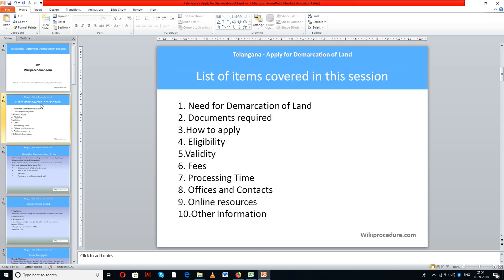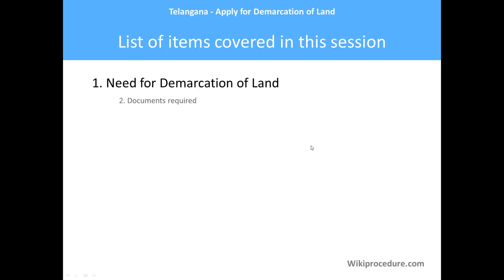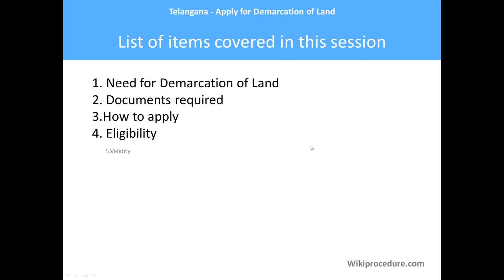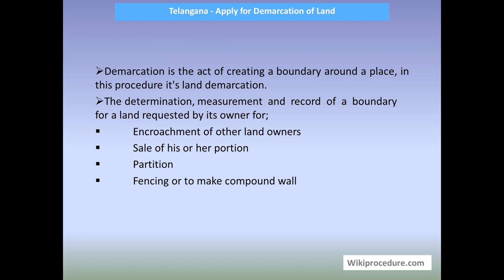Items covered in this session: need for demarcation of land, documents required, how to apply, eligibility, validity, fees, processing time, offices and contacts, online resources, and other information. This procedure is sponsored by Wikiprocedure.com.